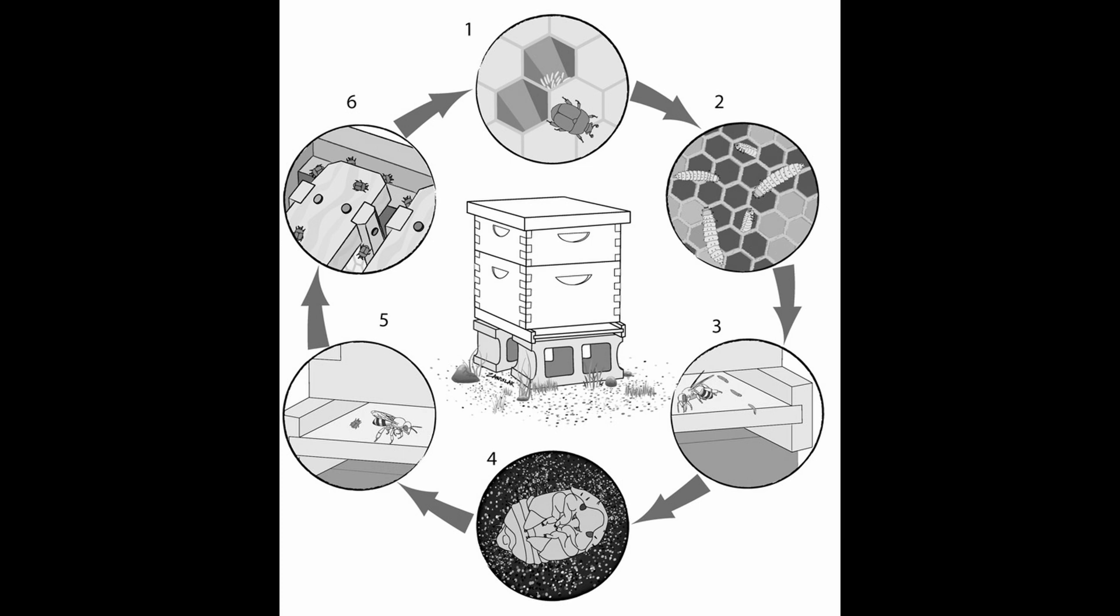Number one at the top just shows that the female comes in and lays her eggs within the cell. Those cells are typically where pollen is. The bees will go in and pack the pollen on those.